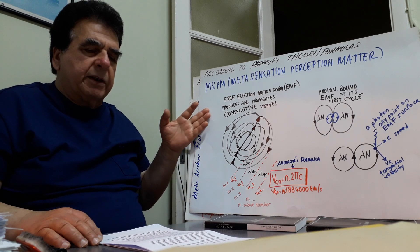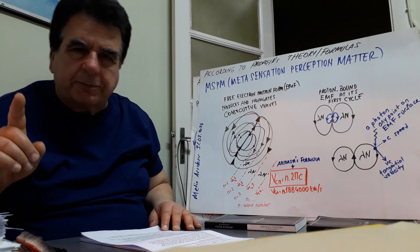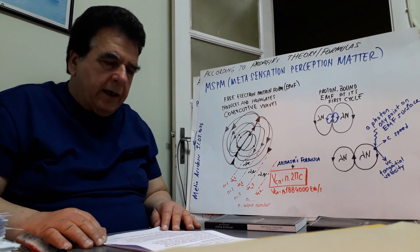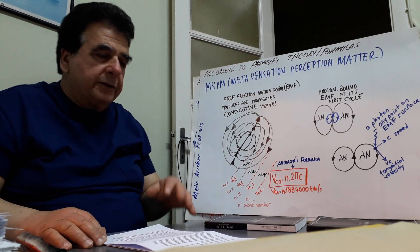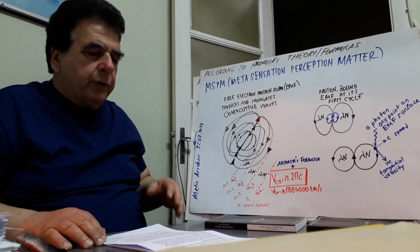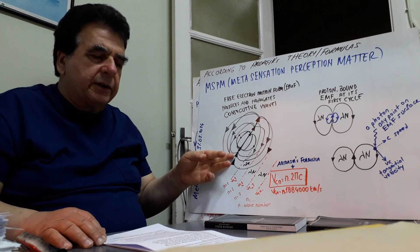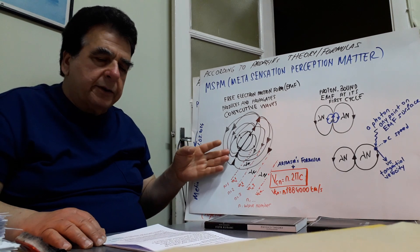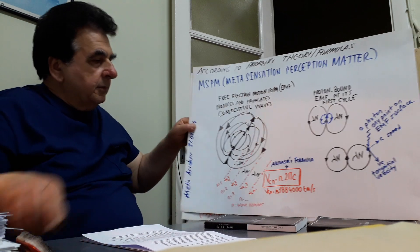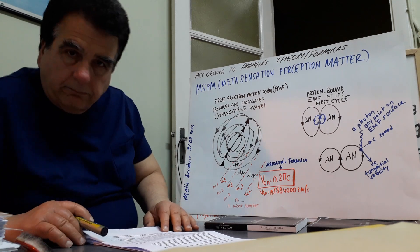It is a repetitive motion form of indivisible, directly invisible, meta-sensation-perception matter — not spirit, matter. So, if an electron motion form is free, it produces and propagates ring-shaped, spherical, intertwined, inter-interacted, interconnected, consecutive, successive waves at each cycle: first cycle, second cycle, third cycle, etc.